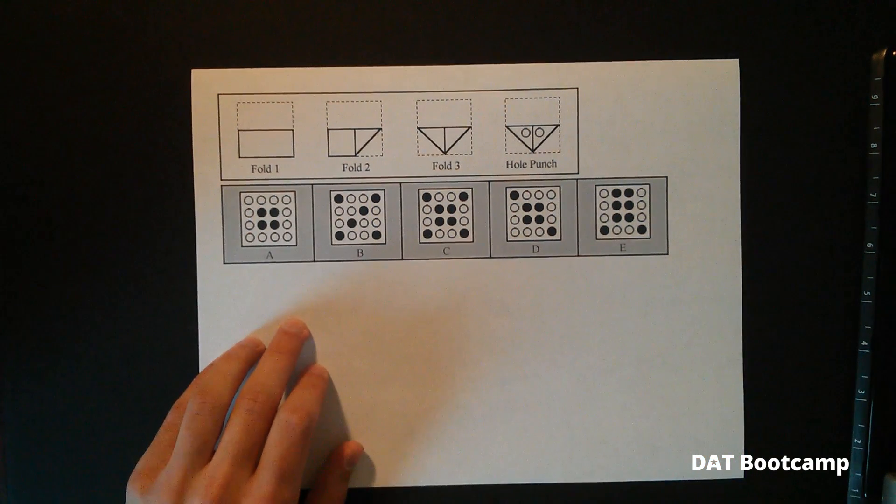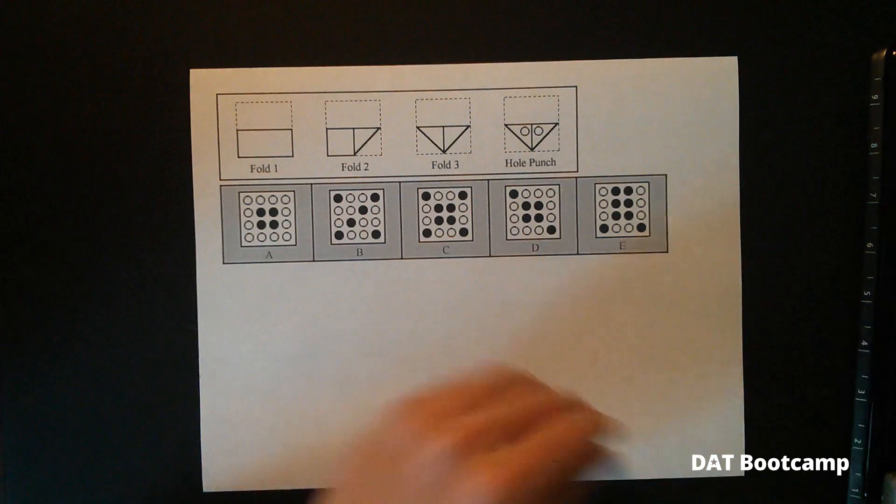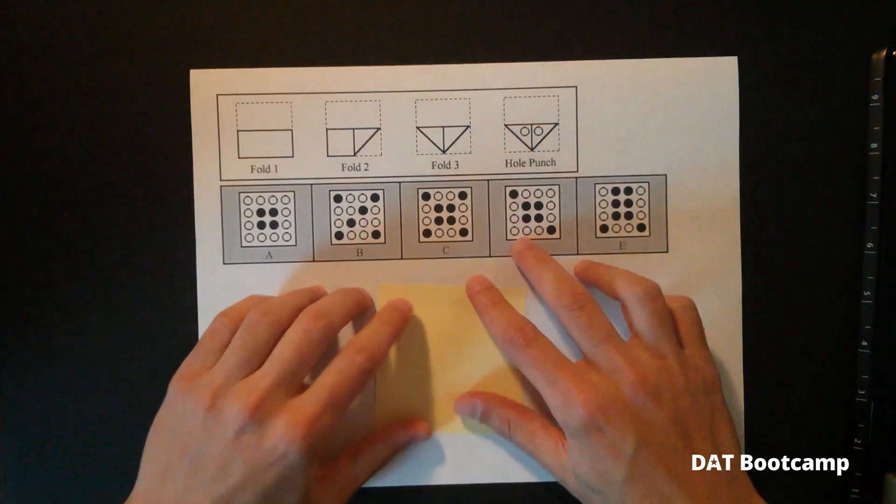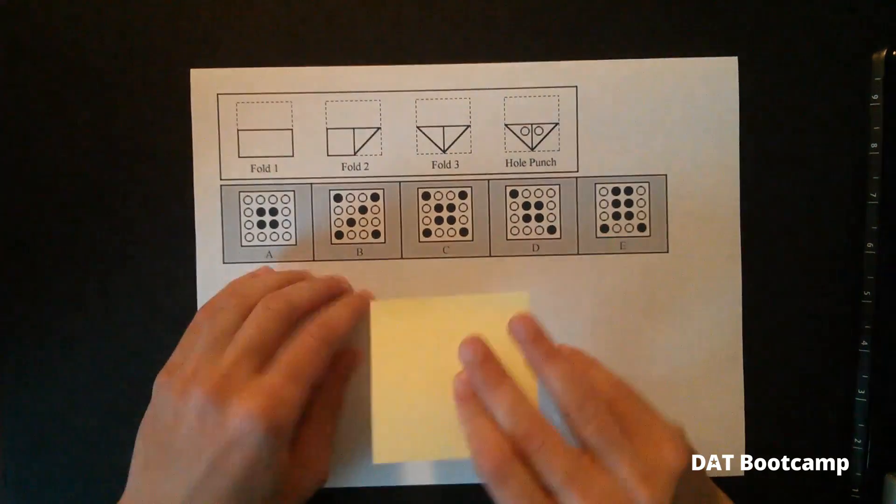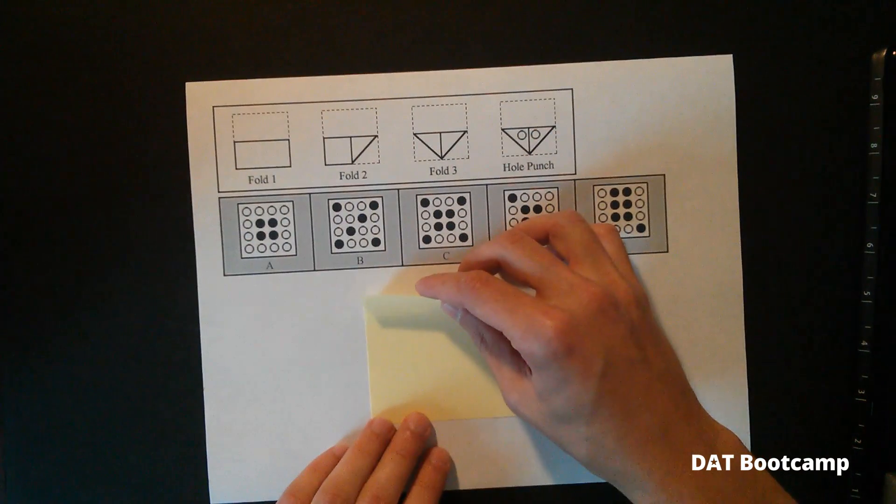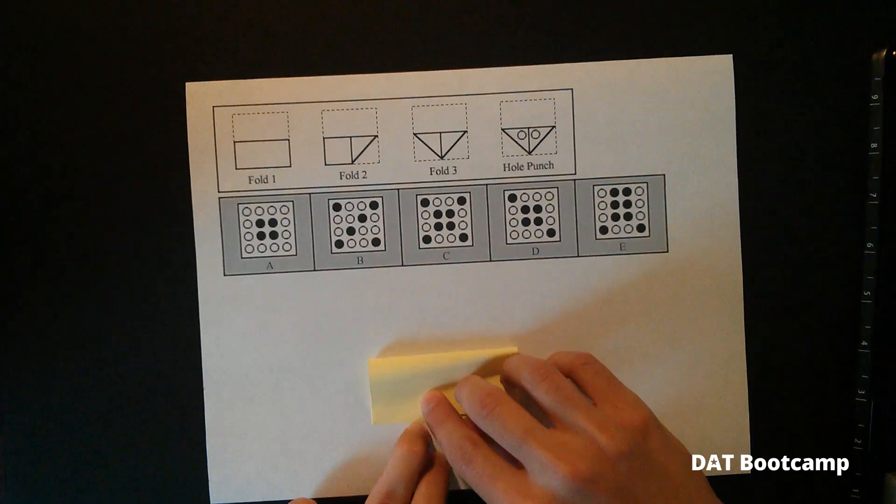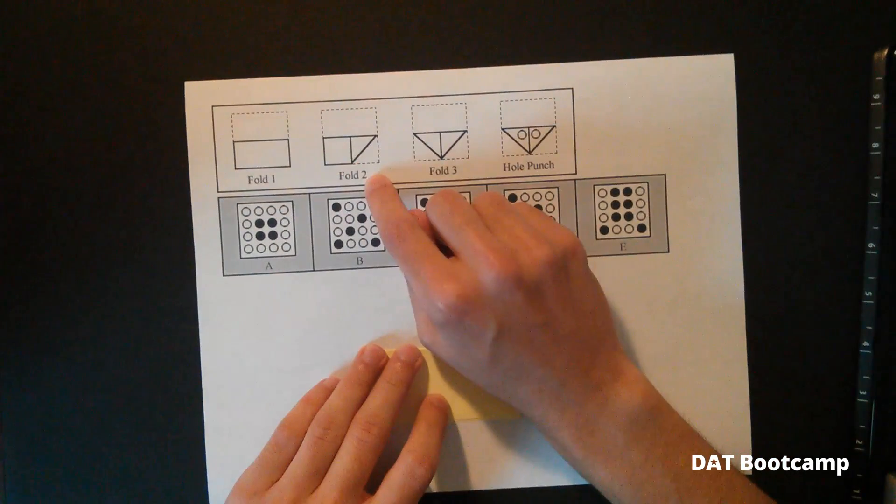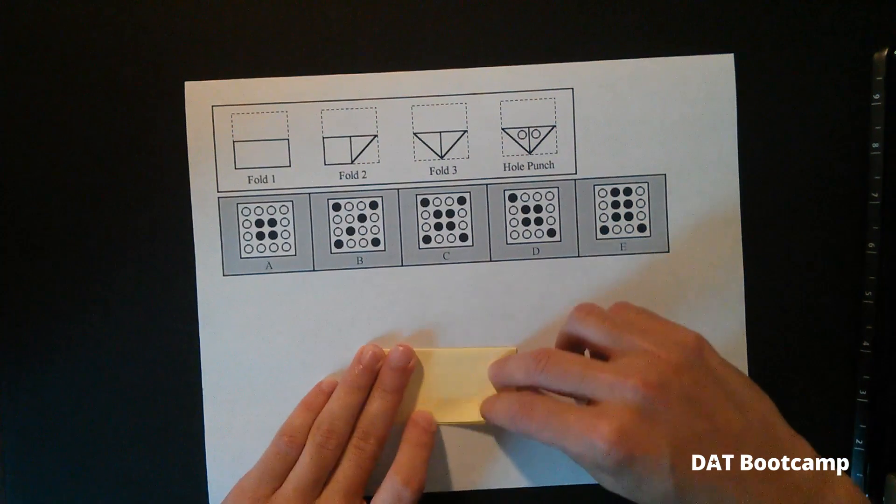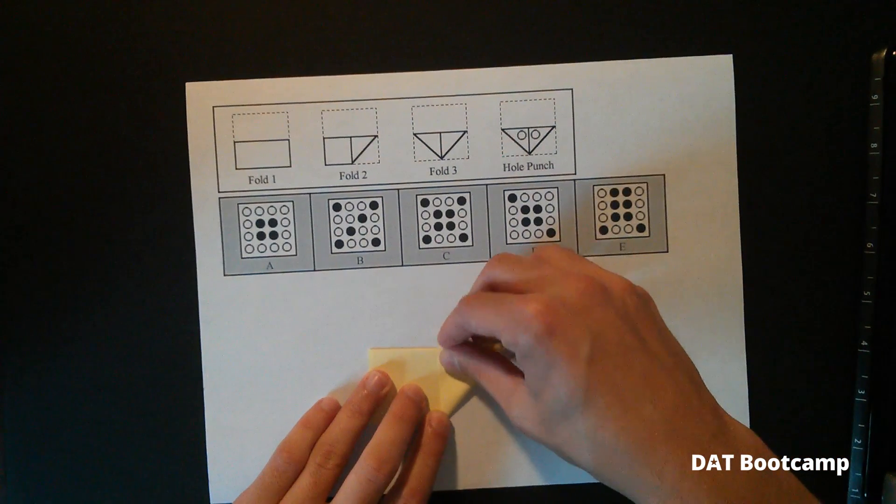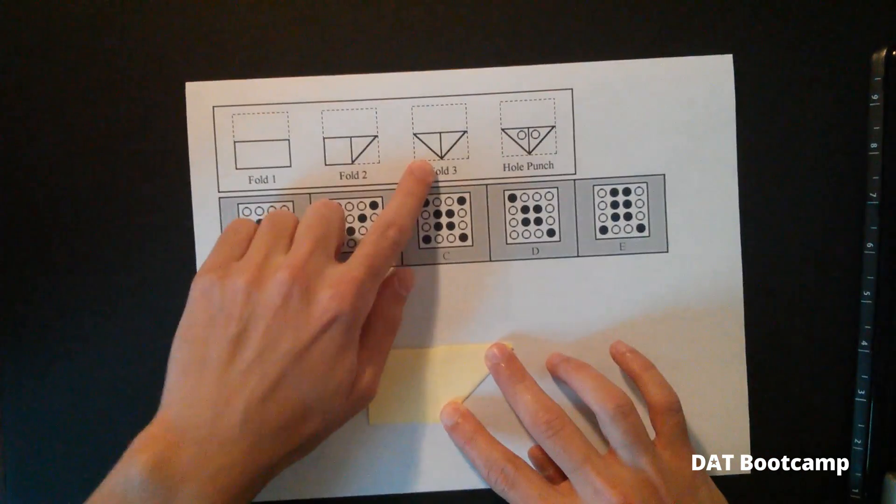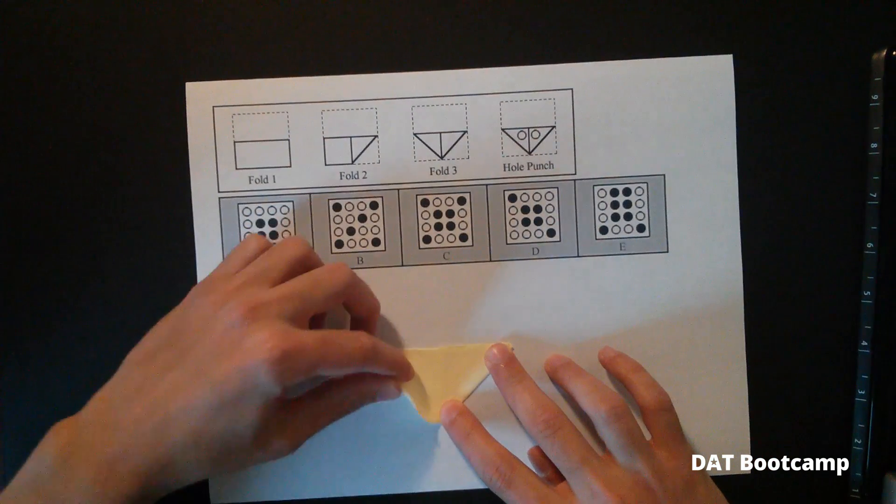So for example, in this problem, let me get another piece of paper here. In this problem, this is what happened. From fold one, the top of the paper was folded down. Like so. Fold two, the paper was folded up by the corner to the halfway mark. Fold three, the other corner was folded up.